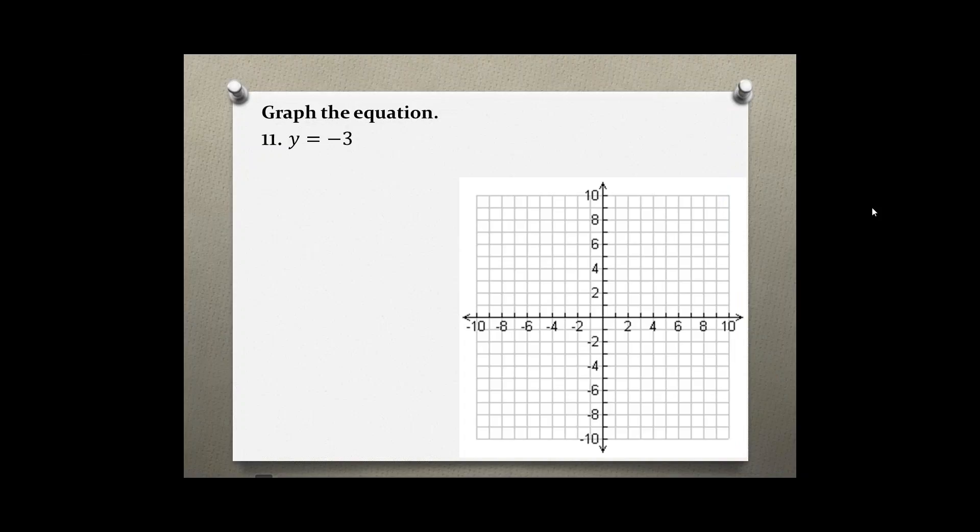Graph the equation. Problem number 11: y equals negative 3. As you notice, this equation looks a little bit weird as it is not in the form y equals mx plus b, and therefore we do not have an x value in this equation.